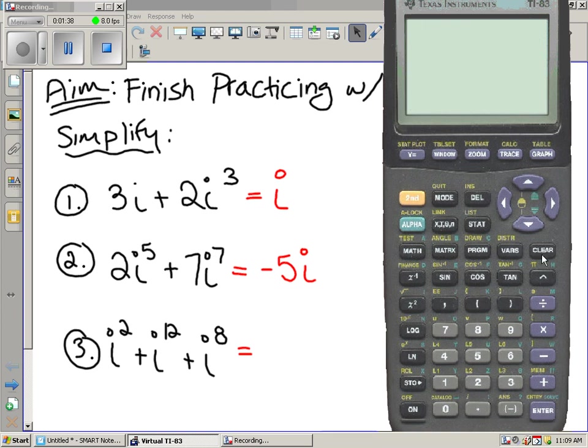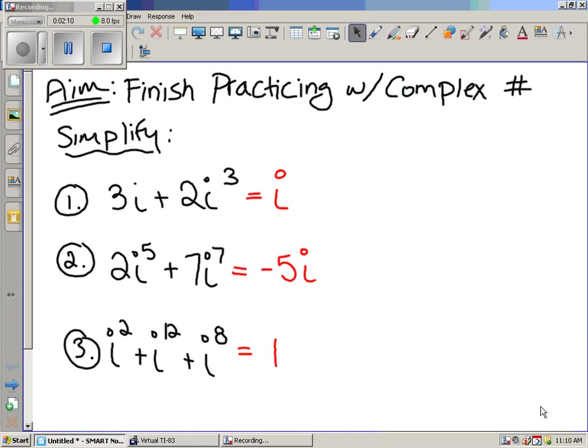Now, we're going to type the same thing in. Two I raised to the fifth plus seven I raised to the seventh. And then you hit enter, and look at that, it does the whole thing for you. Did you get the same answer? Good. Yeah, now you only really need to use that I part if you encounter problems with the calculator giving a ridiculous answer. Let's try the last one. I squared plus I raised to the twelfth plus I raised to the eighth. And we got a good answer, right? Are there any questions on this? Piece of cake?